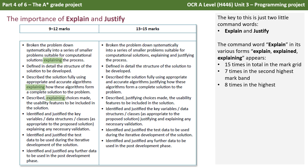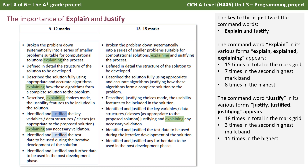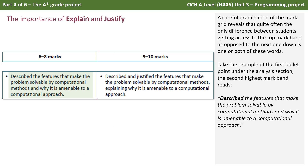The key to this is just two little command words: explain and justify. The command word 'explain' in its various forms appears 15 times in total in the mark grid — seven in the second highest and eight in the highest mark band. In a similar way, the 'justify' command word appears 18 times in total in the mark grid, three in the second highest and 15 in the highest mark band. A careful examination of the mark grid reveals that quite often the only difference between students getting access to the top mark band as opposed to the next one down is one or both of these command words.